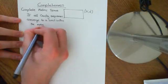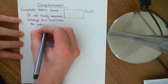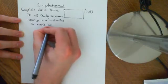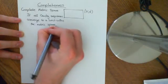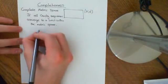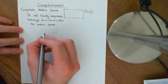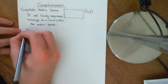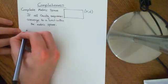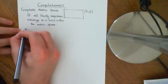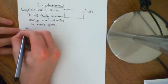That is the definition of a complete metric space. The definition of why it's called 'complete' comes from looking again at the example we saw at the end of the last video — an example of a metric space in which we had a Cauchy sequence that didn't converge.